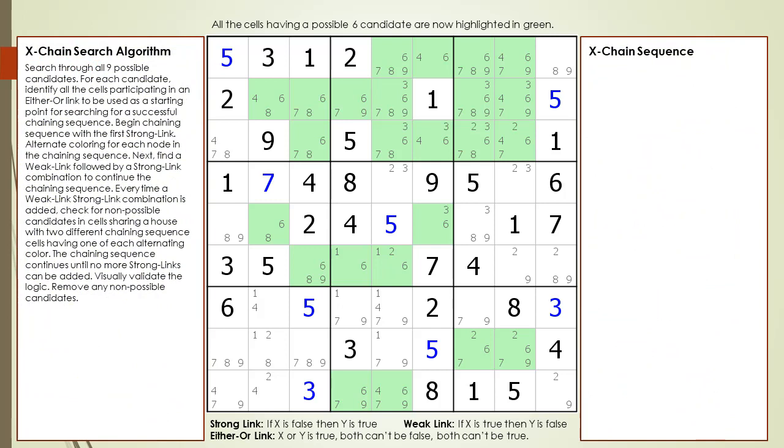Here is the x-chain search algorithm. At this point in the puzzle, candidates 1 through 5 have already been searched. We currently have all the cells with a possible 6 candidate highlighted.